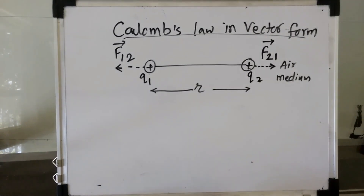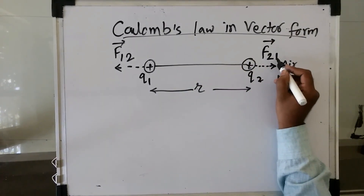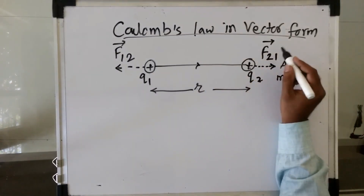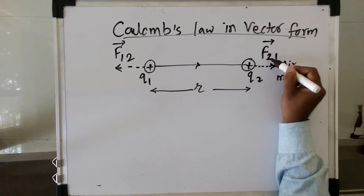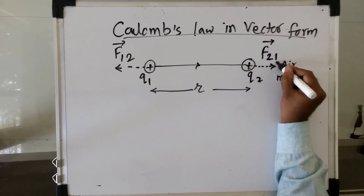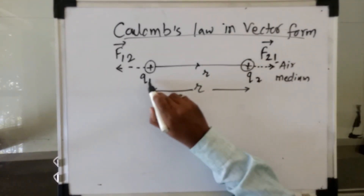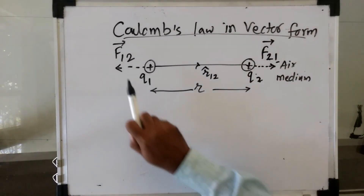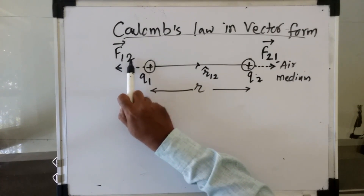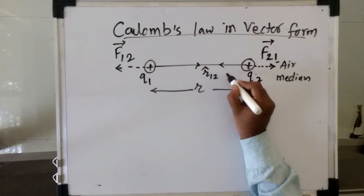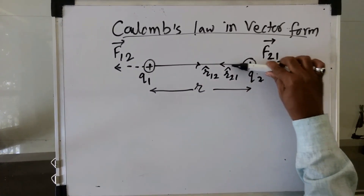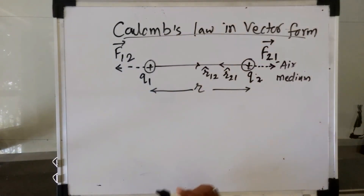Now we have to consider two unit vectors along the direction of these forces. F21 bar has a unit vector along its direction — the force acts on the second charge due to the first charge, so the unit vector is directed from first to second, denoted by R12 cap. Similarly, the force acting on the first charge due to the second charge has unit vector R21 cap, directed along force F12 bar.